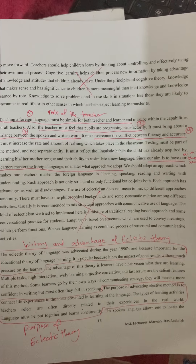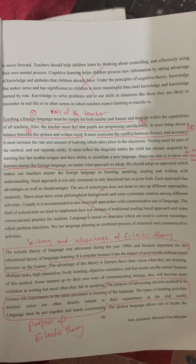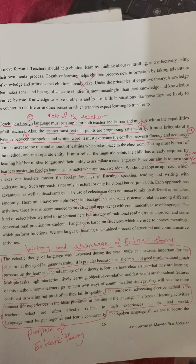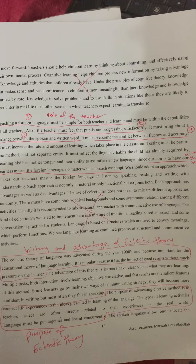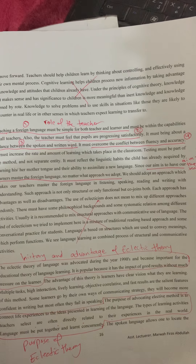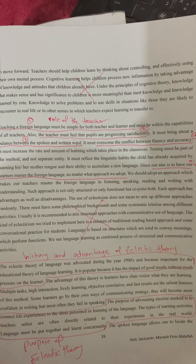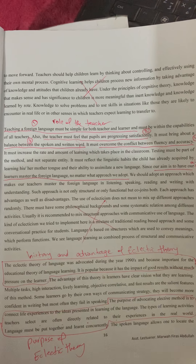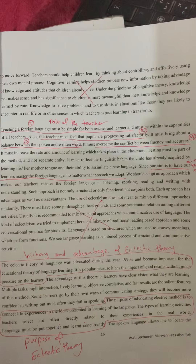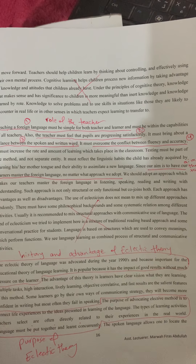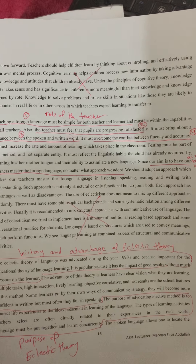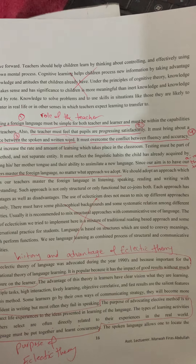There are four items regarding the role of the teacher. First, teaching a foreign language must be a symbol for both teacher and learner. Second, the teacher must feel that pupils are processing satisfactorily. Third, there must be a balance between the spoken and written word. Fourth, the teacher must overcome the conflict between fluency and accuracy.